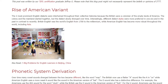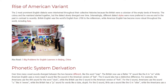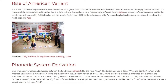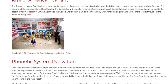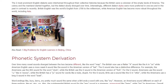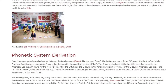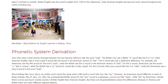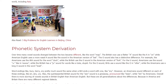Phonetic System Derivation: Over time, many vowel sounds diverged between the two dialects. For example, the British now use a flatter sound like the A in 'on' for words like 'map,' while American English uses a more nasal A sound like in 'bat.' The O sound also has a distinctive difference — Americans use the A sound for the word 'clock,' while the British use the O sound as in the American pronunciation of 'fork.'